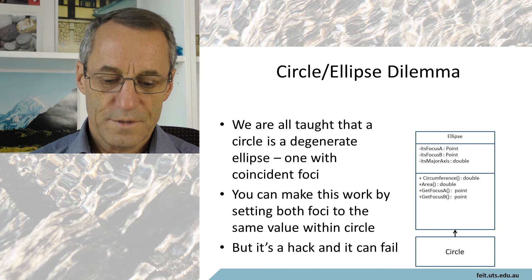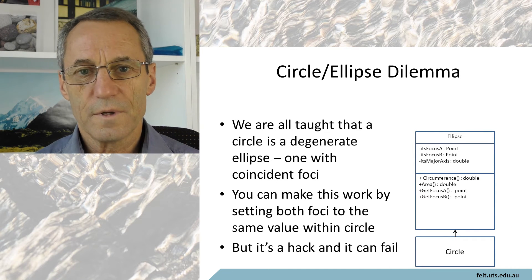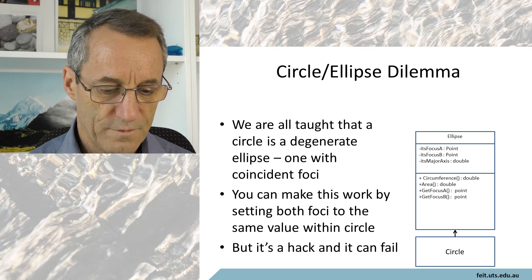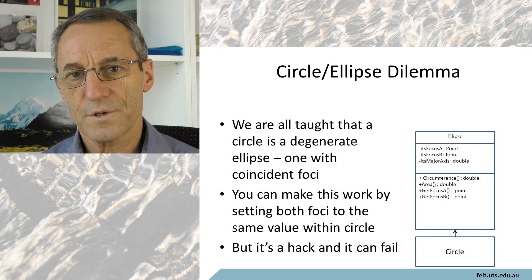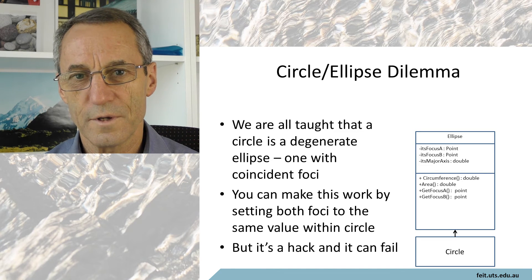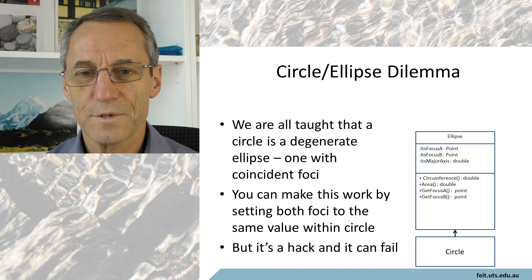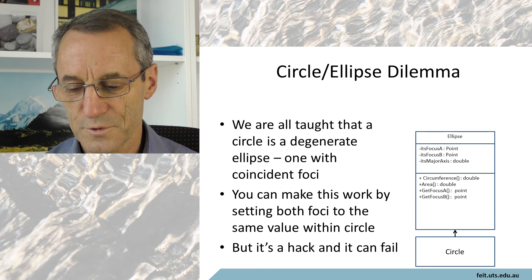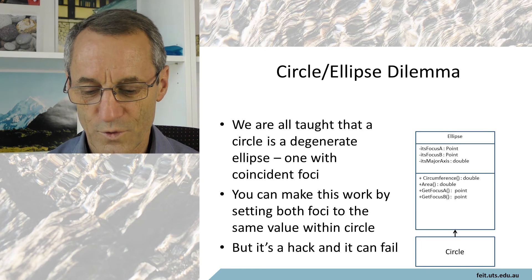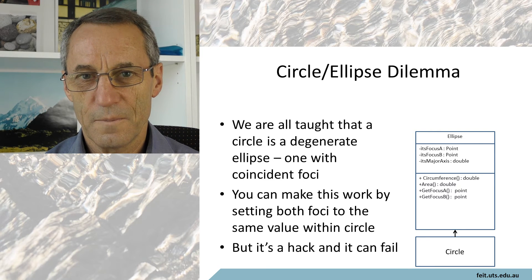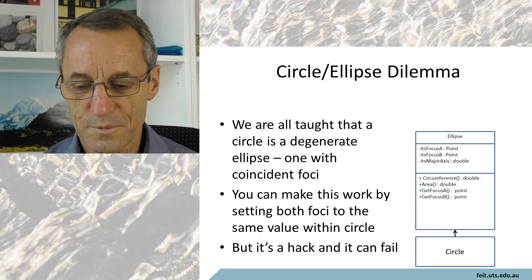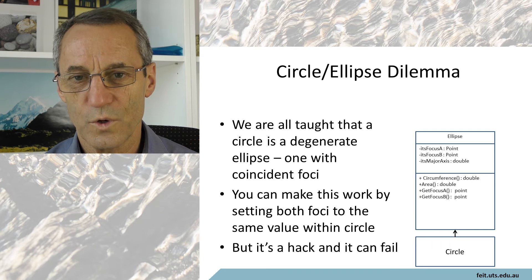An example of that is the circle and ellipse dilemma. If you have a class for an ellipse, a circle is a degenerate ellipse — or you can go the other way, saying an ellipse is a special case of a circle with two focal points. You can get the substitution in there and make it work.